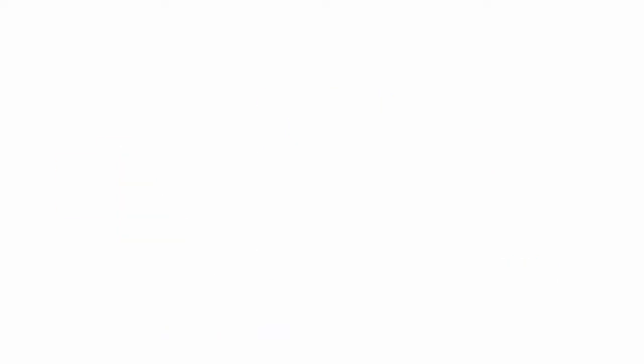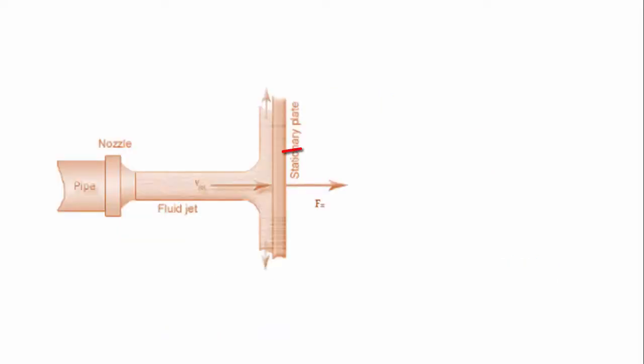Let's assume a water jet impinging over a flat, vertical, and stationary plate. I am repeating, it's an assumption. In the actual turbine, it's not flat, it's not stationary.